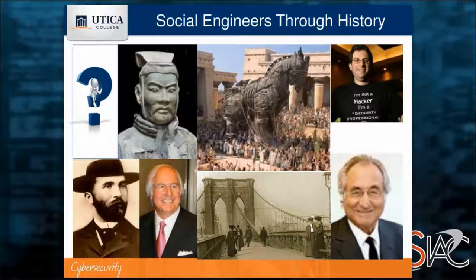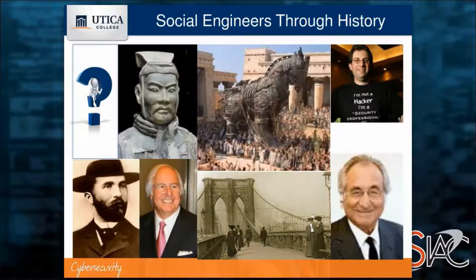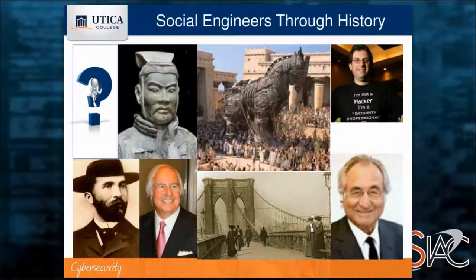George Parker was the guy who actually sold the Brooklyn Bridge, crafting documents that looked real to convince people they could own a share. He did the same with the Statue of Liberty and Madison Square Garden — he was an awesome forger. Bernie Madoff pulled off one of the biggest Ponzi schemes the world has ever seen. Above him, we have Kevin Mitnick, who we all know in the social engineering world. And of course, there's the Trojan horse at the top center.